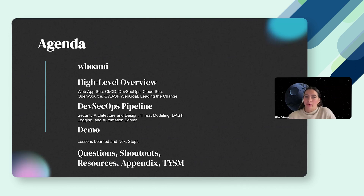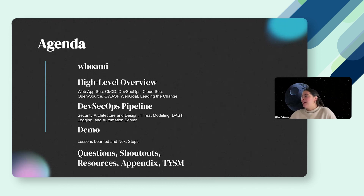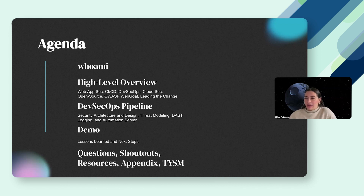As a high-level overview, I'll give a bit more explanation on myself. We're going to go through some definitions — web app security, CICD, DevSecOps, cloud security — topics we'll breeze right through. Then we'll go into what the idealized DevSecOps pipeline looks like, discuss security architecture and design, threat modeling, dynamic application security scanning, logging, and an automation server. We'll have a demo breaking down all those steps, then wrap up with questions, shoutouts, and resources.